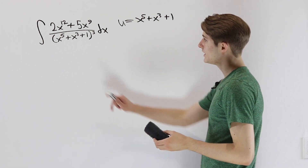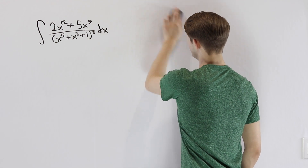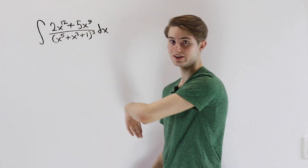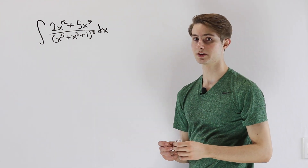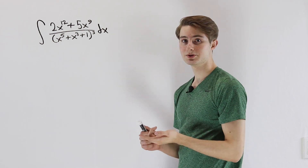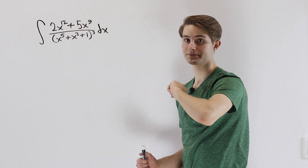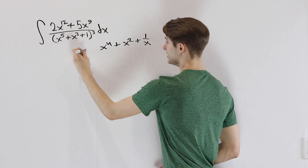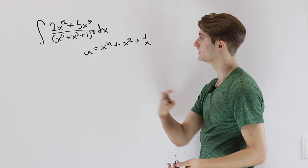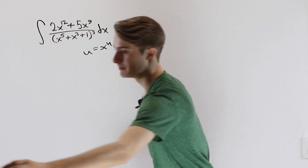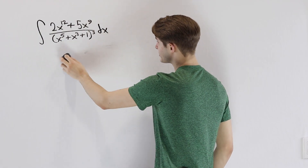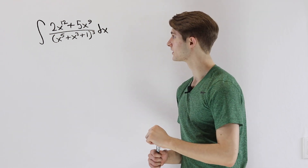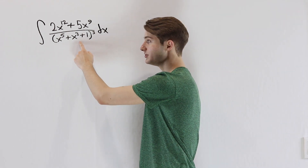One thing we can do is divide both the numerator and denominator by a particular power of x. We want a substitution that leaves us with a du of only two terms. If we divide by something like x, we get x⁴ + x² + 1/x as our u, but then du involves three terms — which we don't have in the numerator. We need to divide by just enough powers of x that one term becomes a constant, because constants vanish under differentiation. Since the 1 is already a constant, we need to eliminate either the x³ or the x⁵ term, so we'll try dividing by x³ or x⁵.